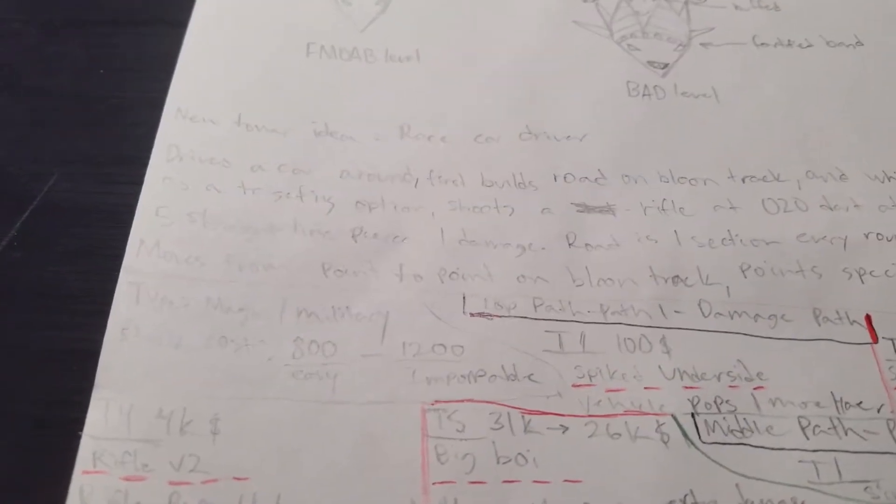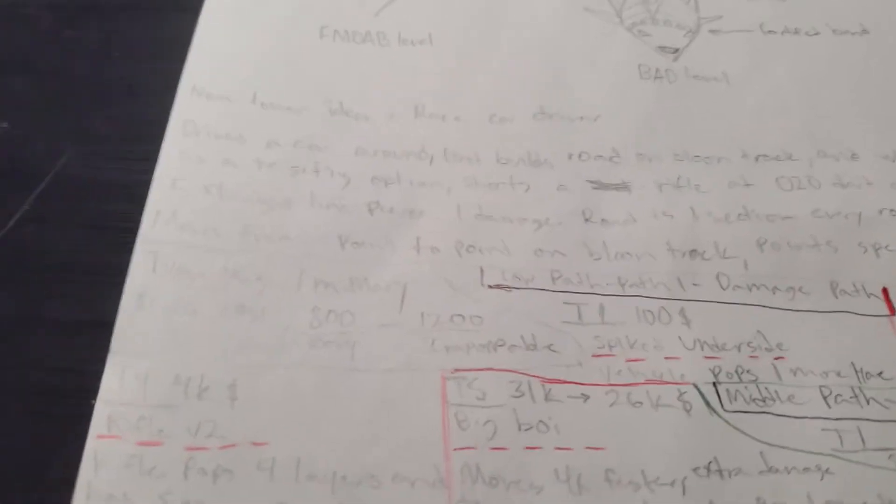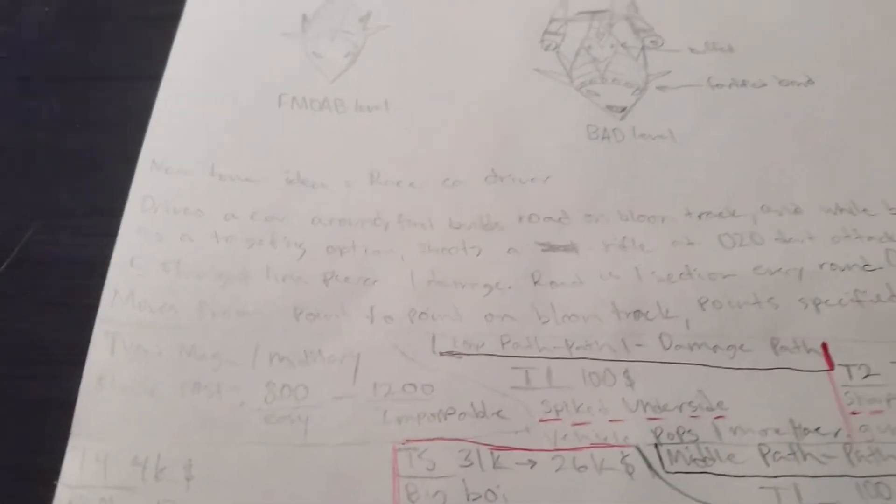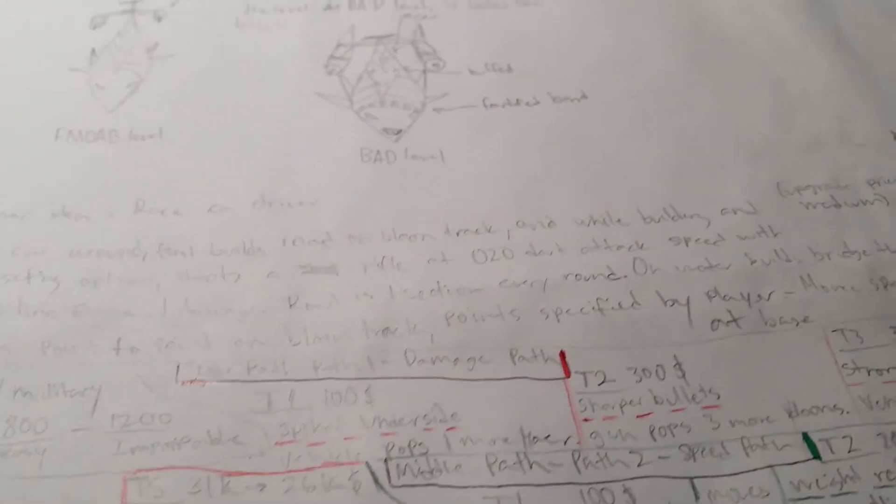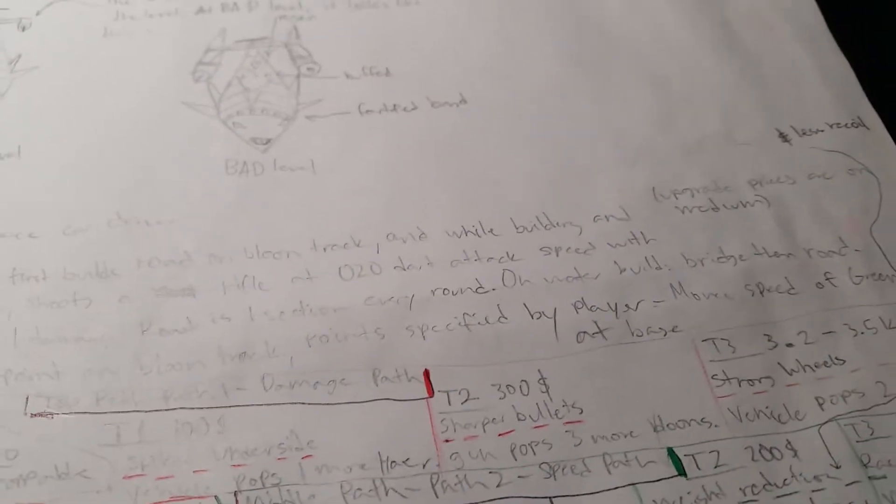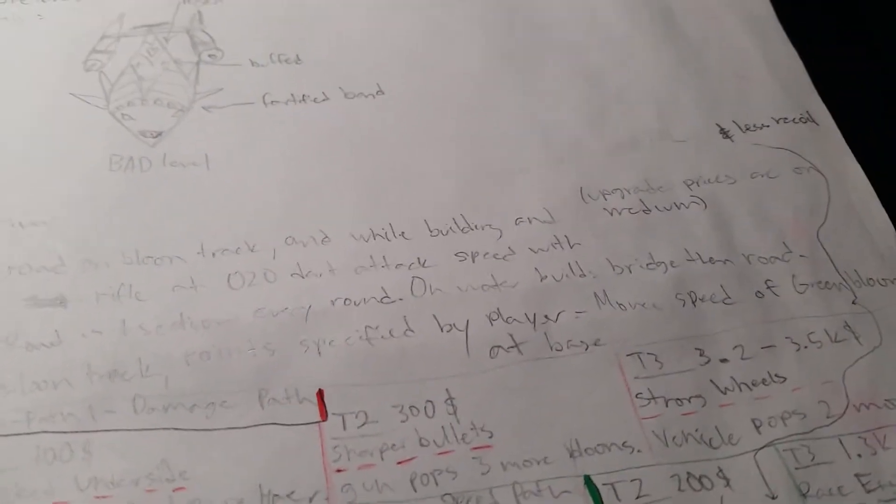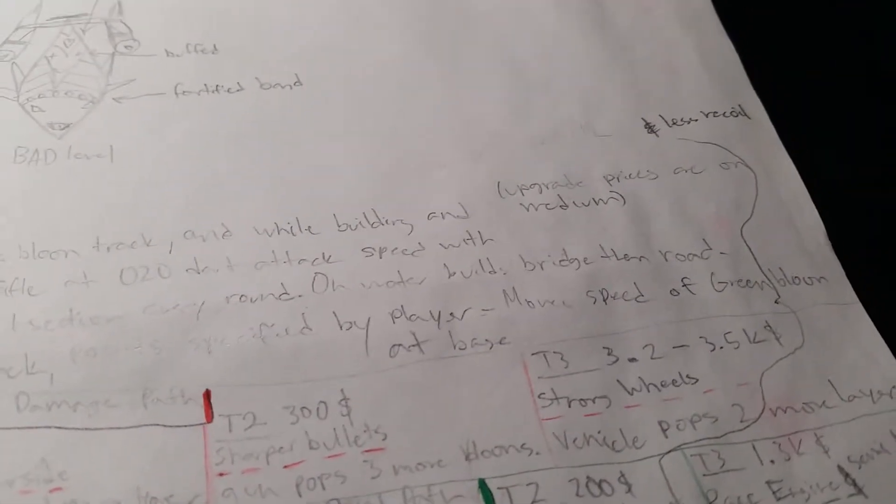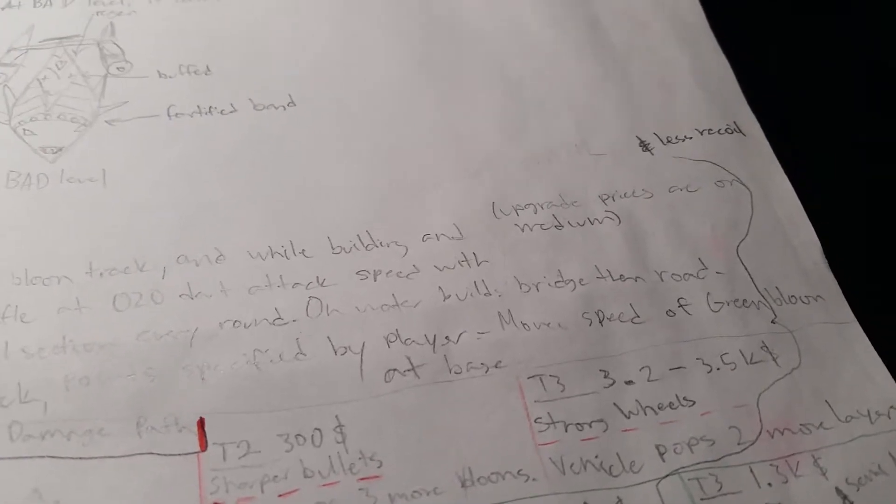Road built is one section every round. On the water it builds a bridge and then a road similar to the train. Then it drives around the balloon track from point to point, and the points are specified by player. At base this moves the speed of a green balloon.